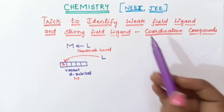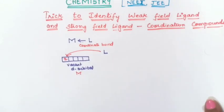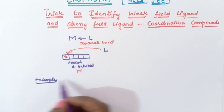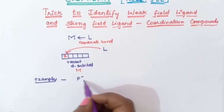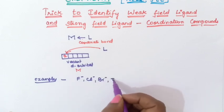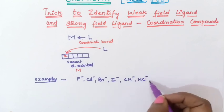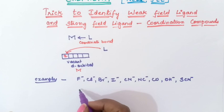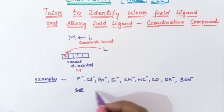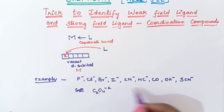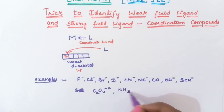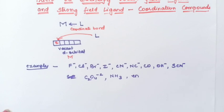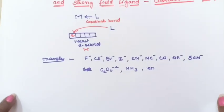Now we will see how to identify a weak field ligand and a strong field ligand. We will take some examples of ligands: F⁻, Cl⁻, Br⁻, I⁻, CN⁻, NC⁻, CO, OH⁻, SCN⁻, C₂O₄²⁻, ammonia (NH₃), and ethylenediamine (en). From these, we have to find out which are strong field ligands and which are weak field ligands.